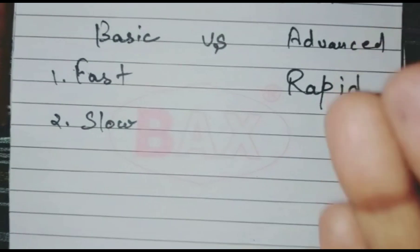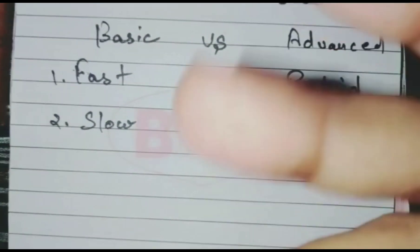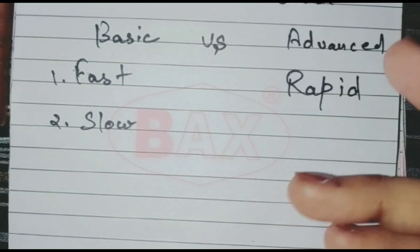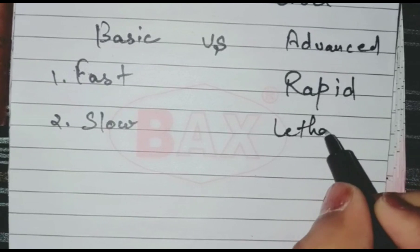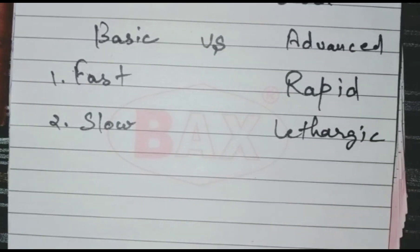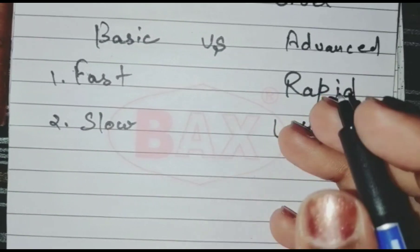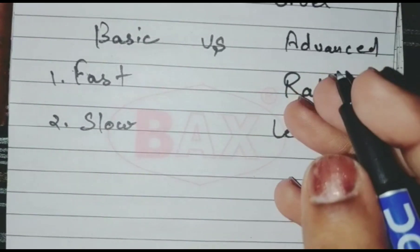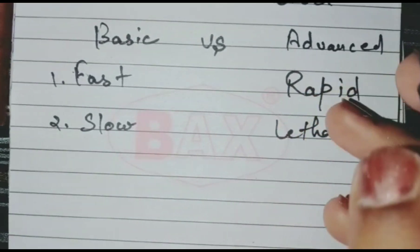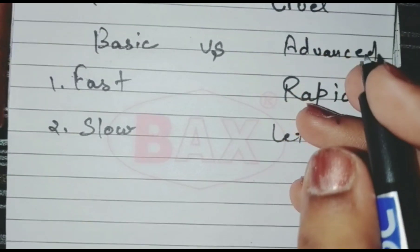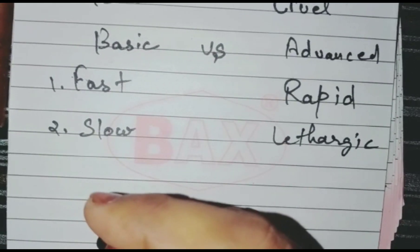The second pair is 'slow' — a more advanced word for slow is 'lethargic.' For example: the sloth was quite lethargic and moved slowly. Thank you.